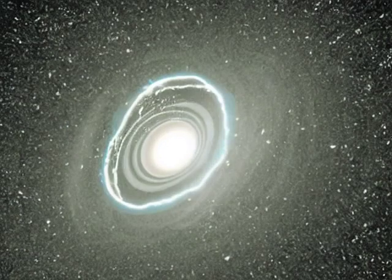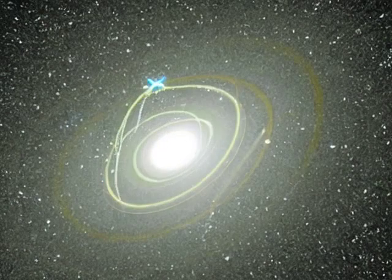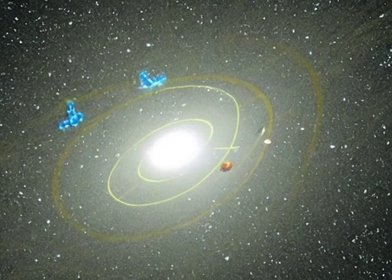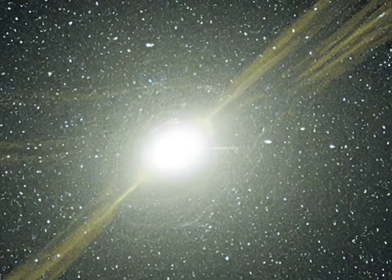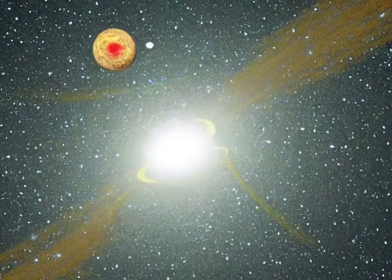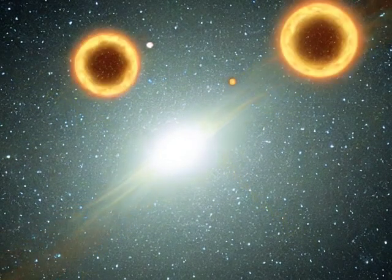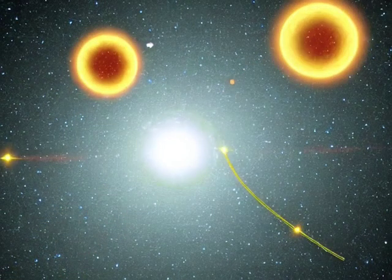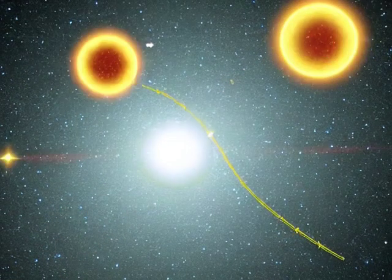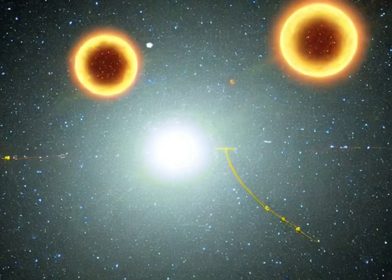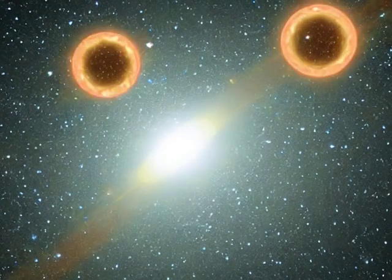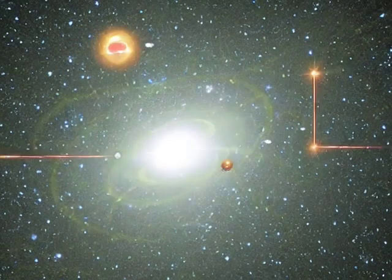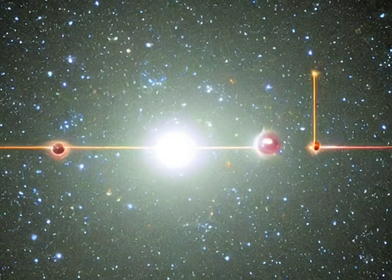Stellar black holes are the end state of very massive stars, and there are an estimated 100 million of them in our Milky Way galaxy alone. However, only a small fraction of them has been detected so far. Most of the detected black holes orbit a companion star closely enough to pull hydrogen gas from the companion star into an accretion disk that surrounds the black hole. The gas becomes hot enough to emit X-rays, which is how they are detected.